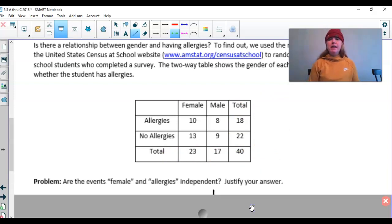Are the events female and allergies independent? Justify your answer. Justify just clearly means show me the mathematics. And then you say yes, they're independent or no, they're not. So let's start with strategy number one.